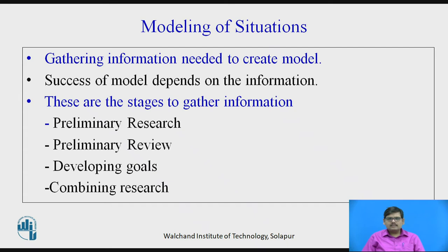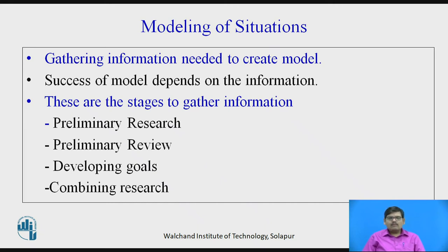Then preliminary review is achieved. When the individuals of the team gather the information on their own basis, they put forth the findings in front of the team. A review of everybody's research is carried out in the preliminary review stage. After the preliminary review, a developing goal or a definite goal is framed, or a problem statement is framed. All the individual team members put forth their research work, review each other's research, and then from that research work a summary is drawn and the product developing goals are stated. With these developing goals, research is combined and they work together to develop a particular product.